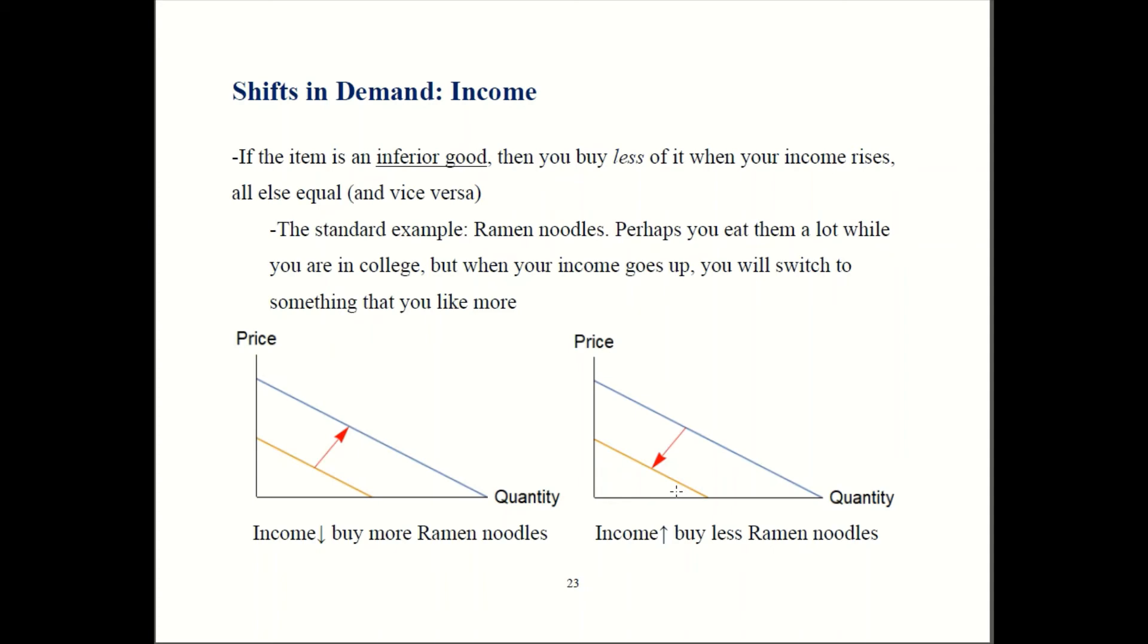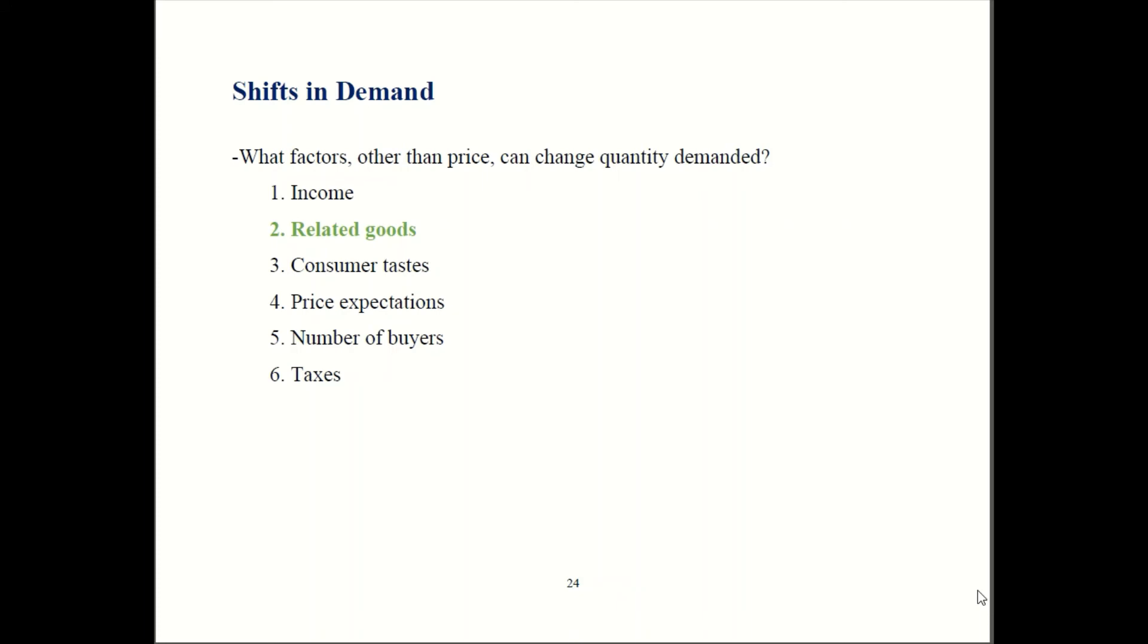Now if you were to lose that job you got through college, if the economy goes into recession again or something like that, then you're poor again and you start going back to buying ramen noodles. In that case, your demand curve would shift out like it does in this graph over here.